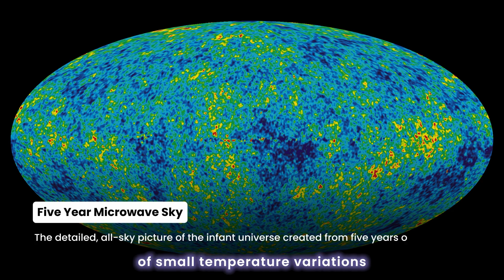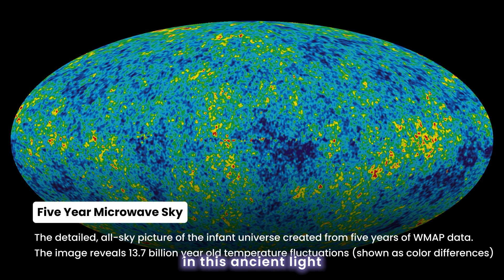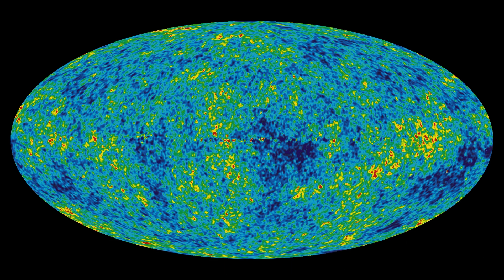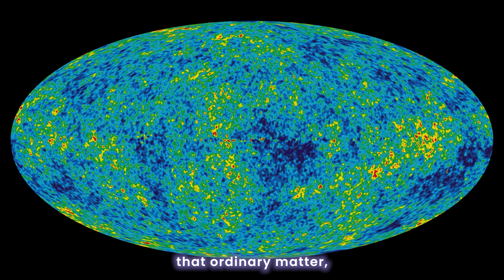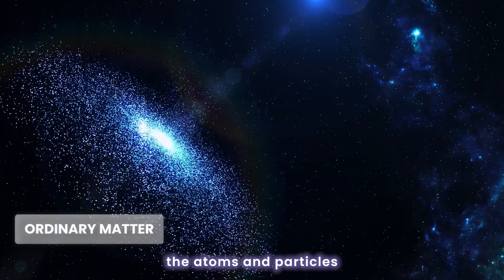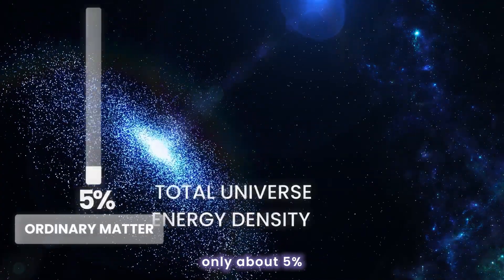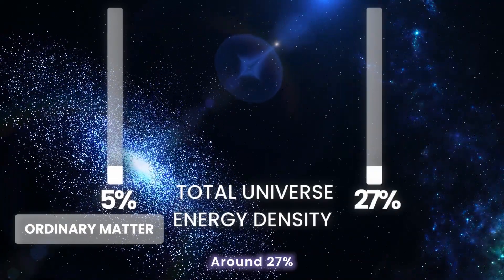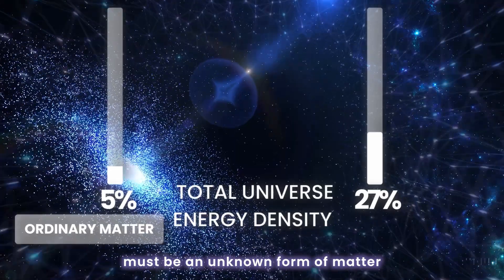Detailed measurements of small temperature variations in this ancient light revealed patterns shaped by the universe's total matter content. These analyses showed that ordinary matter, the atoms and particles we know, makes up only about 5% of the universe's total energy density.